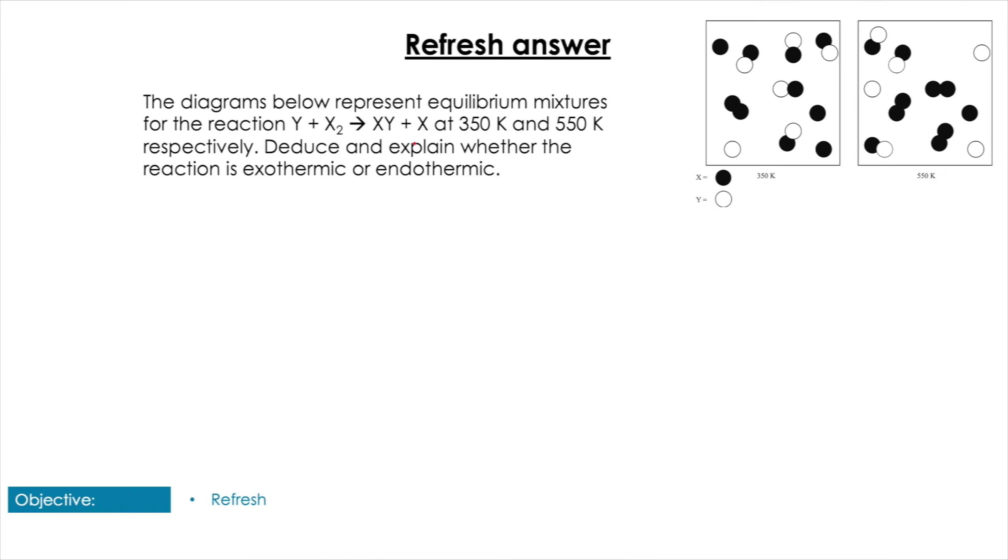When doing a question like this, we need to consider Le Chatelier's principle. Remember, it is going to oppose the change. What information do we have in the question? Well, they say it starts at 350 Kelvin and goes to 550, so going from left to right we have an increase in temperature. On the right-hand side we can see we have three of the individual Y molecules or Y atoms, and on the left-hand side we have one. What does this tell us about the reaction then?